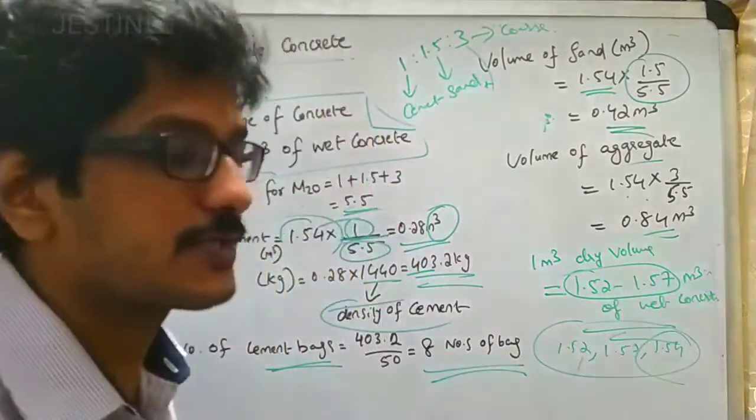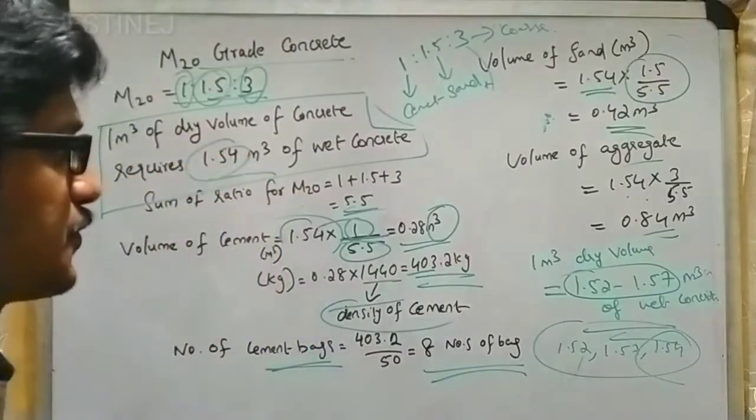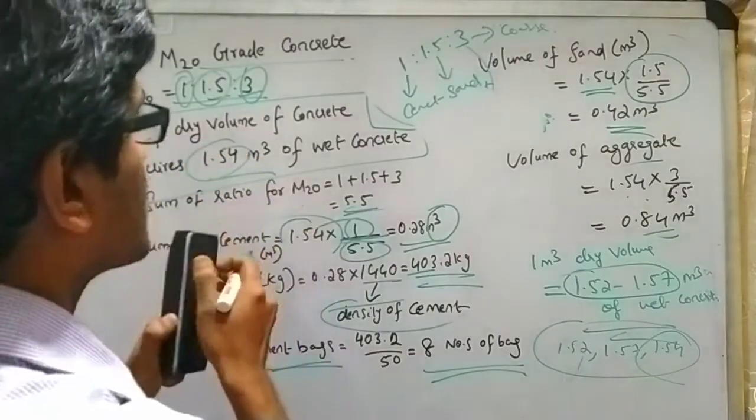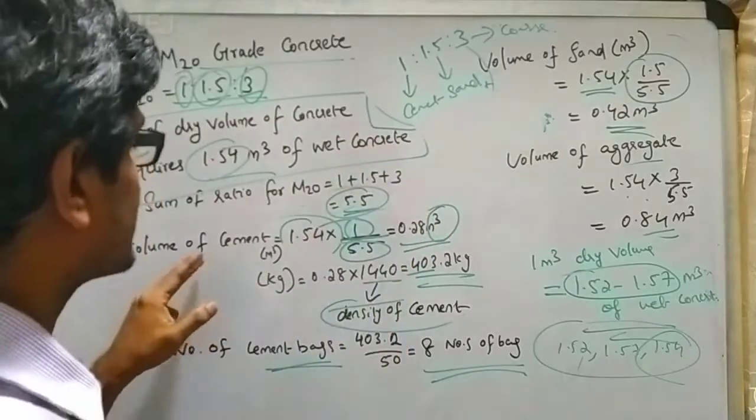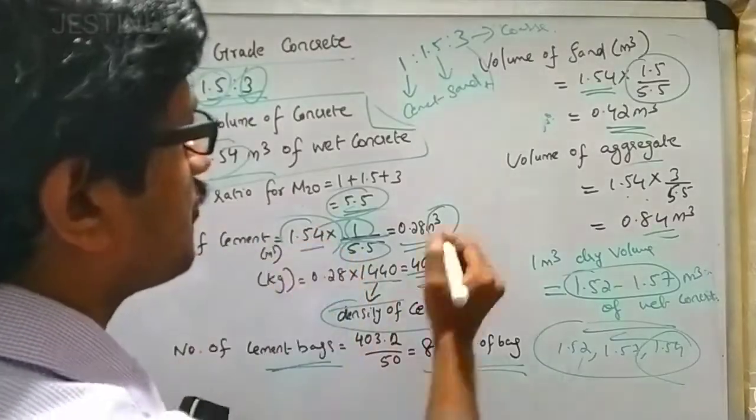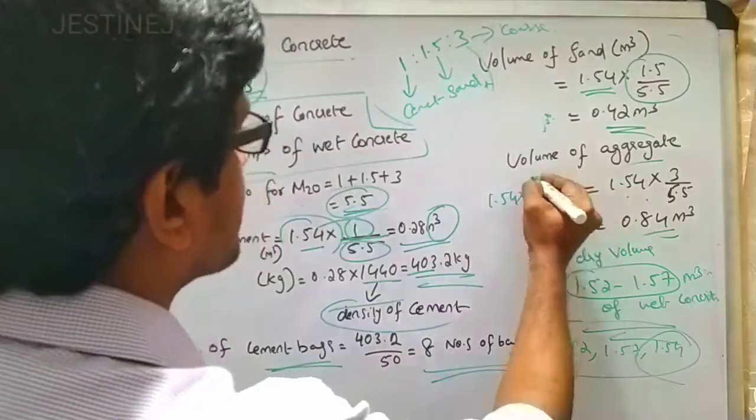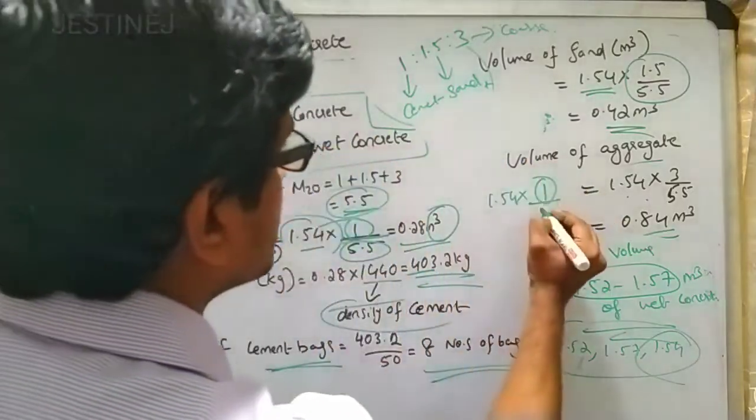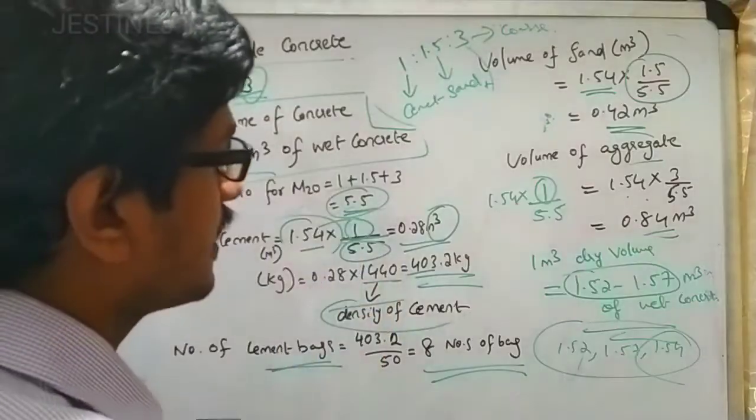Here we are going to consider 1.54 cubic meters. The sum of this ratio is 5.5. You can easily calculate the volume of cement as 1.54 multiplied by 1 divided by 5.5, where 1 represents the cement ratio and 5.5 is the total sum of the ratios. You will get the value as 0.28 cubic meters.